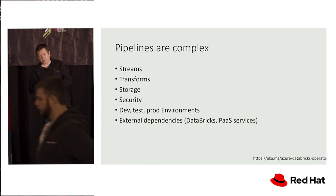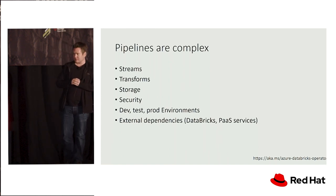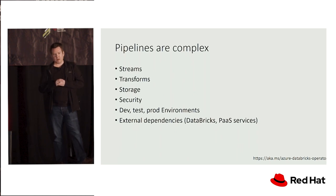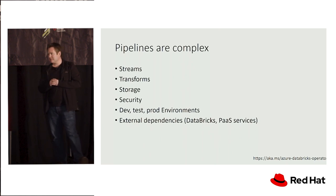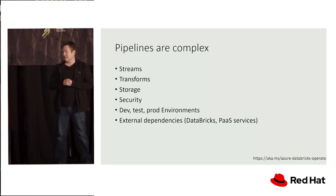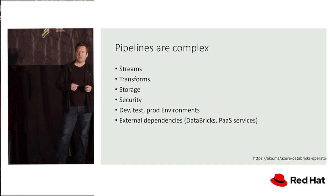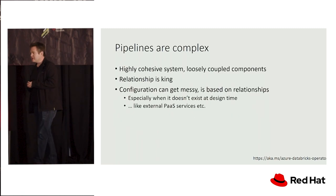The problem is that pipelines are fairly complex systems. They contain many components like streams, and our particular pipeline has a bunch of storage and Databricks transforms. We have a range of environments to worry about — dev, test, and prod — as well as security and external dependencies. When you start working with PaaS services or cloud-native services in Azure or AWS, you start thinking about how to manage those without having a whole second paradigm in your flows.